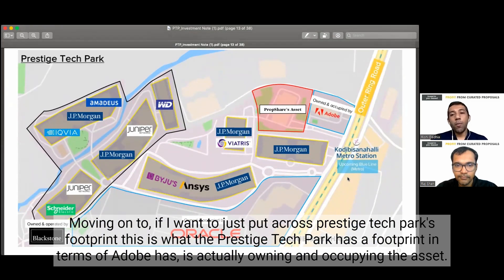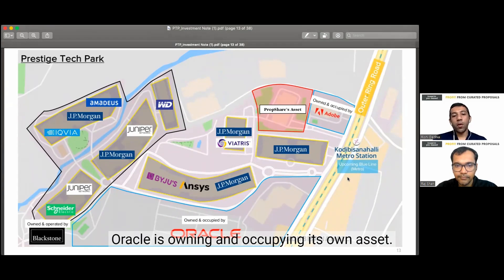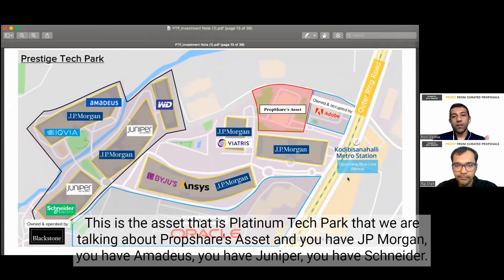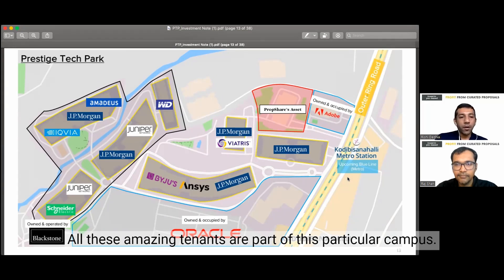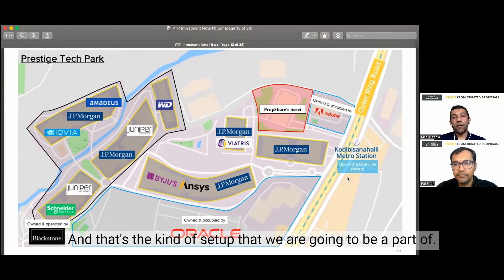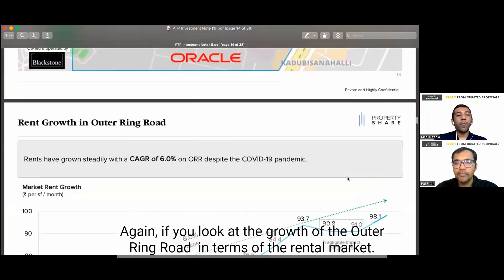Moving on, if I want to just put across Prestige Tech Park's footprint, this is what the Prestige Tech Park has a footprint in terms of Adobe is actually owning and occupying the asset. Oracle is owning and occupying its own asset. Here, this is the asset that is Platina Tech Park that we are talking about, PropShare's asset. And you have JP Morgan, you have Amadeus, you have Juniper, you have Snyder. So all these amazing tenants are part of this particular campus. And that's the kind of setup that we are going to be a part of.